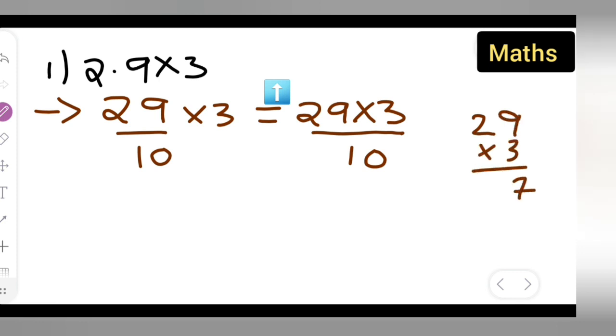3 nines are 27. 3 twos are 6, carry 7, gives 8. So your answer will be 87. So what you are going to get is 87 upon 10, which is equal to 8.7. That is your answer.